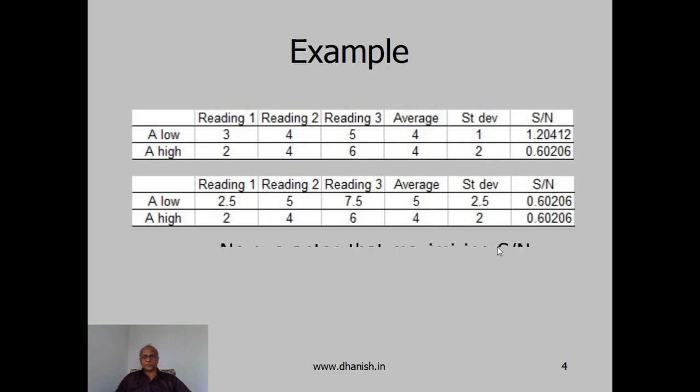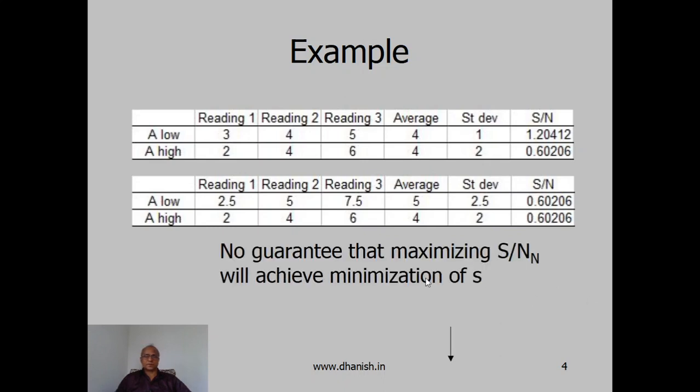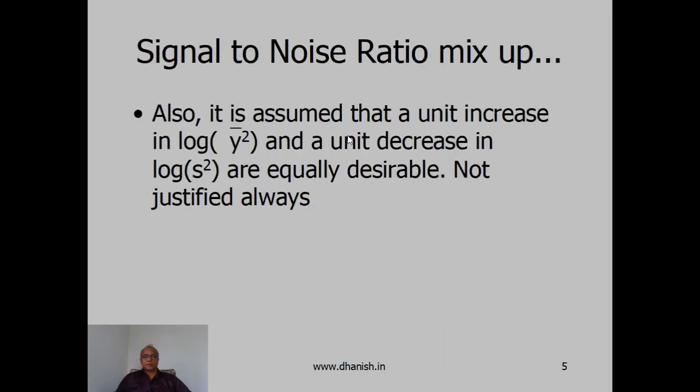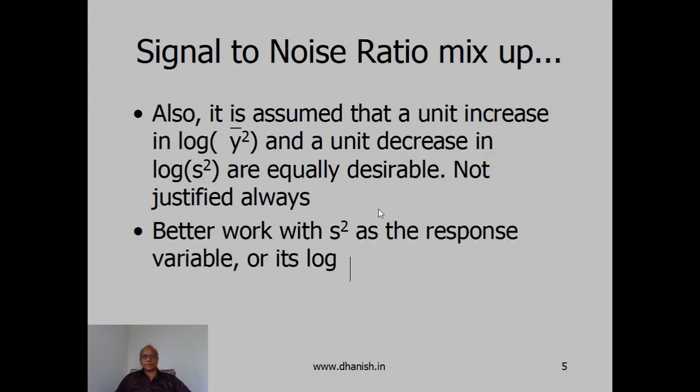So which is better? We cannot be sure, depends on the situation. Thus, there is no guarantee that maximizing signal to noise ratio will minimize s or vice versa. It is assumed that a unit increase in log of y bar square and a unit decrease in log of s square are equally desirable, but this may not always be justifiable. So instead, it would be better if we work with s square as the response variable or its log, rather than mixing up two together in the signal to noise ratio.